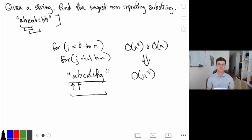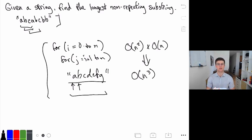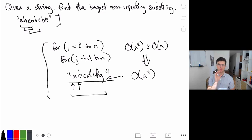For space complexity, our hasDupe function still takes O(n) space because it fills in the entire set — we're storing each of the characters. So we get a space complexity of O(n). So the brute force is O(n³) time and O(n) space.